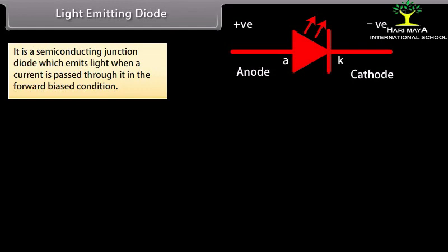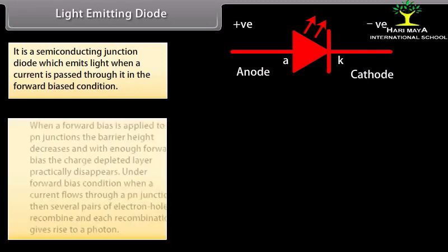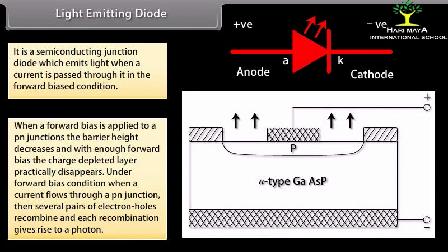Light emitting diode: It is a semiconducting junction diode which emits light when a current is passed through it in the forward biased condition. It is a P-N junction made of gallium arsenide (GaAs) or some other suitable semiconducting material. The P-layer is made thin so that light energy may reach the charge depleted region after travelling a very short distance. When a forward bias is applied, the barrier height decreases and the charge depleted layer practically disappears.